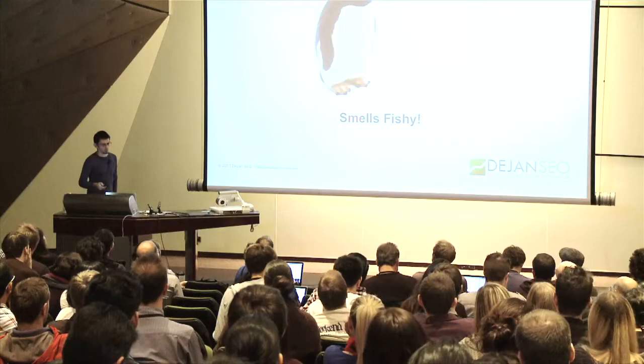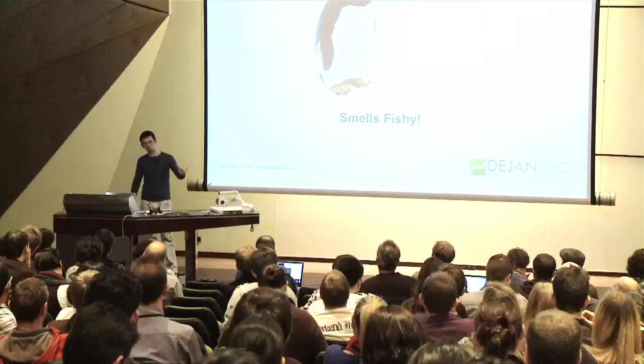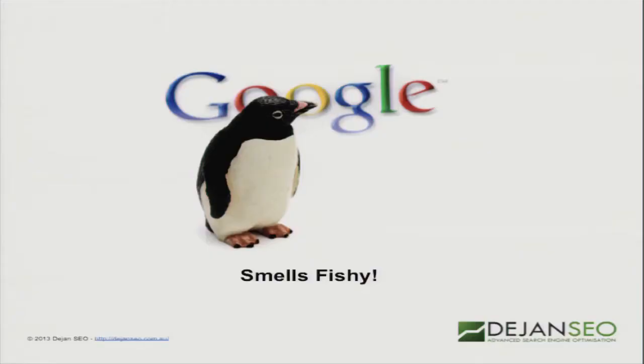While Panda is a page quality algorithm, Penguin looks for link schemes. We all know that links help your rankings — and if you want to rank for 'Web Design Melbourne,' you'll put 'Web Design Melbourne' in the footer of all your clients. Who does that? That smells fishy to Google, and Penguin will catch it as soon as it escalates to a significant level to affect their rankings.